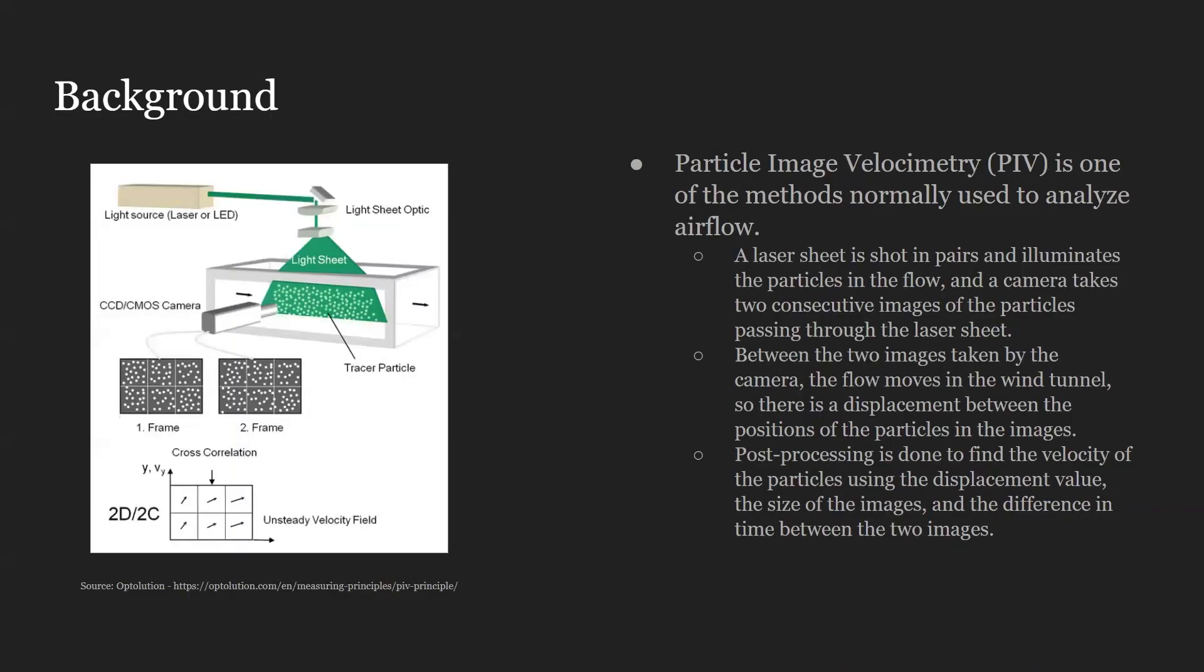Particle image velocimetry PIV is a measurement used to analyze airflow. In a traditional PIV setup, we have a flow that goes through a wind tunnel, and there's a laser that shoots two consecutive shots.